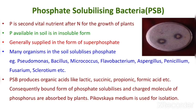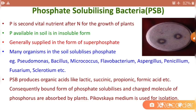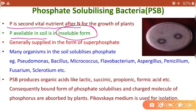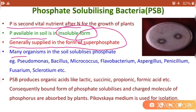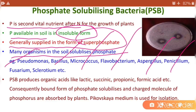The next type is Phosphate Solubilizing Bacteria, also called PSB. Phosphorus is the second vital nutrient after nitrogen for the growth of plants. It is available in soil in insoluble form and generally supplied as superphosphates. Many organisms in the soil solubilize phosphate, for example Pseudomonas, Bacillus, Micrococcus, Phylobacterium, Aspergillus, Penicillium, Fusarium, and Sclerotinium.